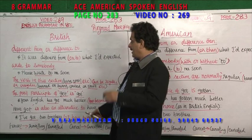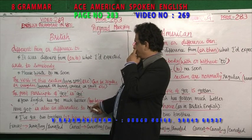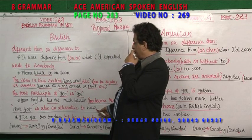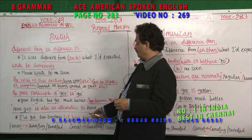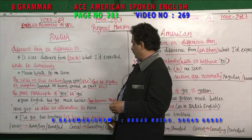"Have got" is also an alternative to "have". For example: "I have got two brothers" or "I have two brothers" — both are acceptable.